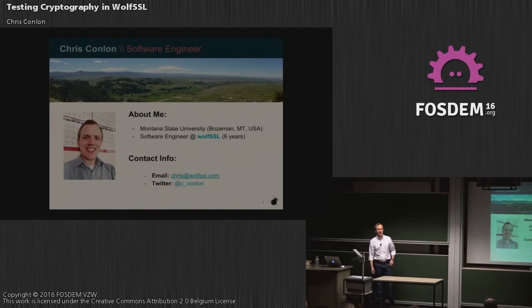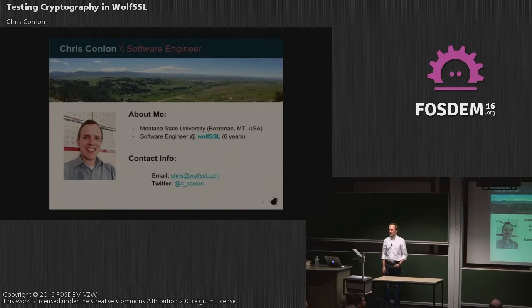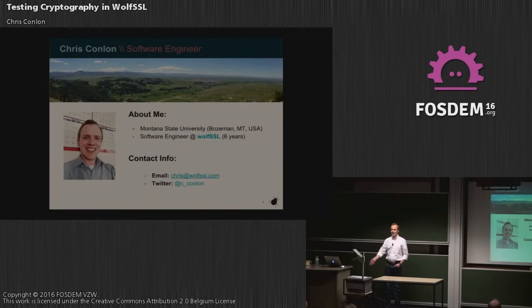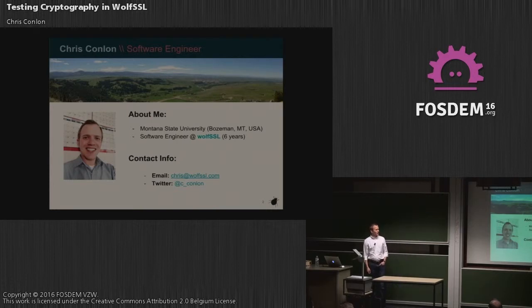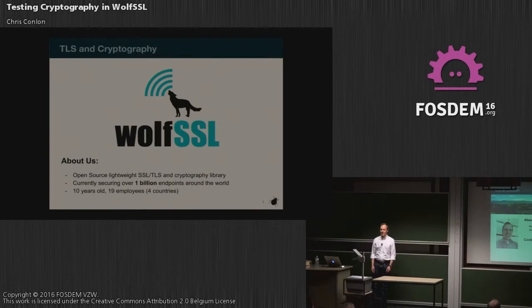My name is Chris Conlon. I'm a software engineer at WolfSSL. I started with WolfSSL when there were only three people, and I live in Bozeman, Montana, in the U.S. I wear a lot of different hats. My main role is software engineering, but I also help our support team, our testing team, and I do some pre-sales and marketing. If you need to reach me, you can reach out over email at Chris at WolfSSL.com. I'm also on Twitter, but email is definitely the best way.